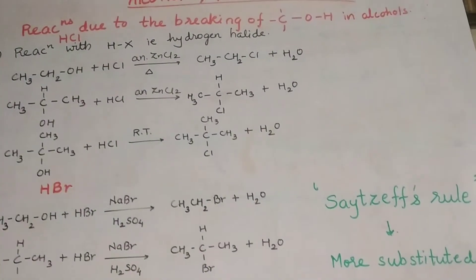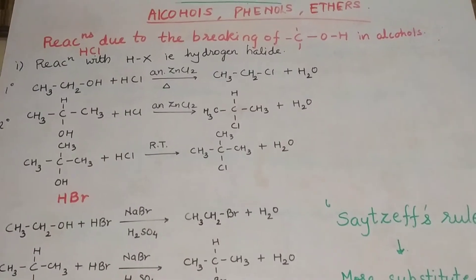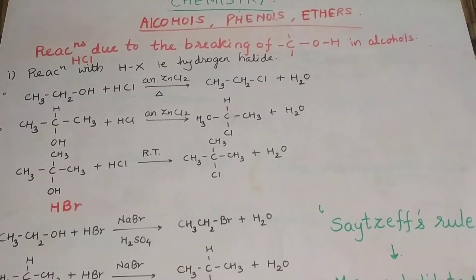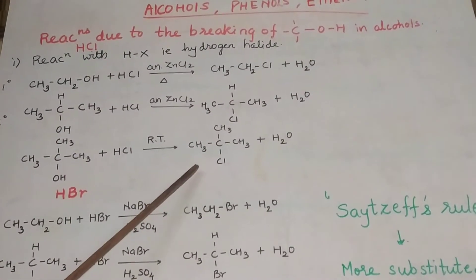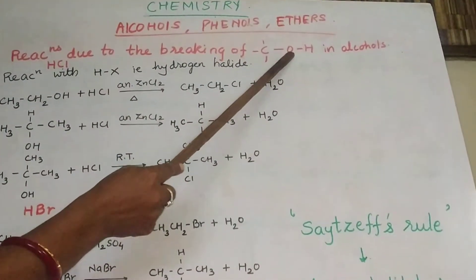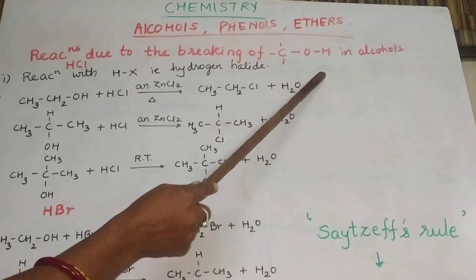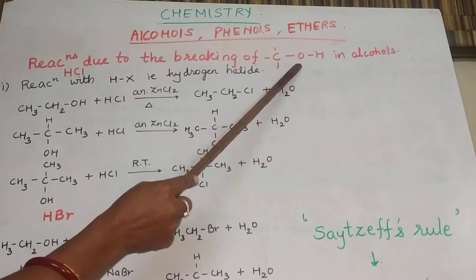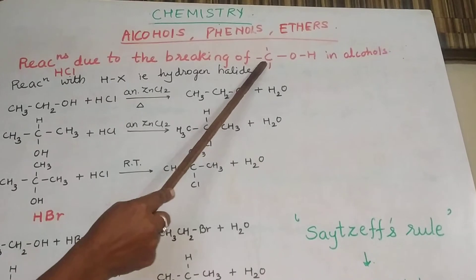We were seeing the reactions of alcohols and phenols which take place due to the breaking of two types of bonds. One is the bond between O and H, which was breaking in the last reactions. Today we will see the breaking of the C-O bond. The reactions today will show the bond breaking of the C-O bond.